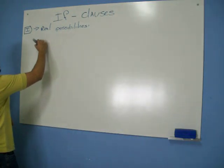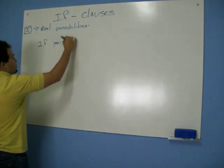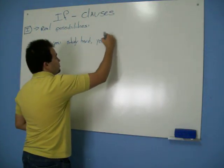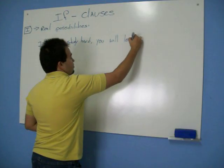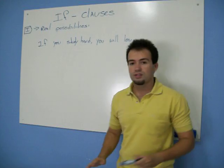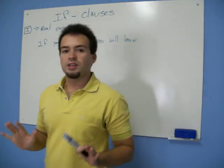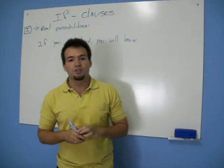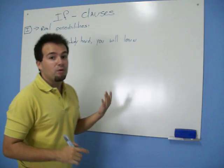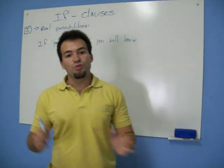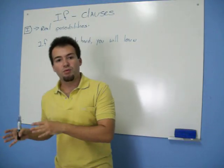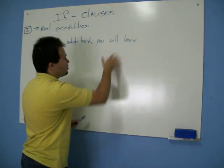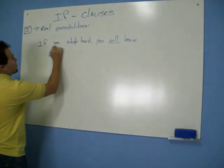Let's have a sentence here: 'If you study hard, you will learn.' See this if-clause — 'if you study hard' is my condition. If I study hard, what is my result? 'You will learn.' So if my condition happens the way I want, my result is going to be this.